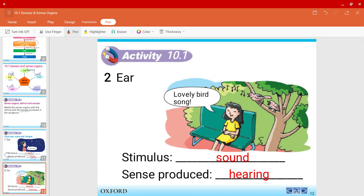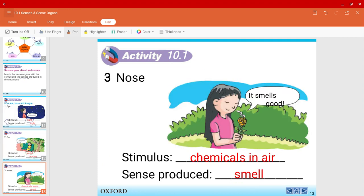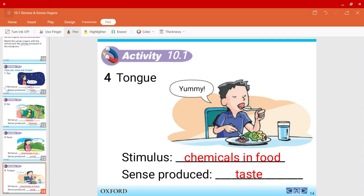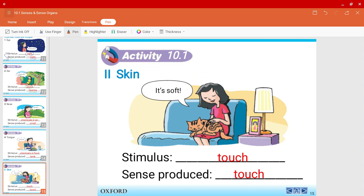The ear: the stimulus that you sense is the sound and the sense produced is hearing. The stimulus for the nose is chemicals in the air and the sense produced is the smell. For the tongue over here, the stimulus is the chemicals in the food and the sense produced is the taste. The skin: for example, they are touching the skin of a cat or any pet. The stimulus is touch and the sense produced is also touch.